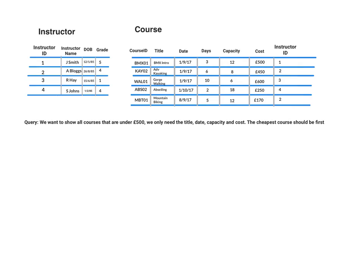We're going to look at this query: we want to find all the courses that are under £500. We only need the title, the date, the capacity, and the cost, and the cheapest course should be first. So the first part is to work out the fields we want — title, date, capacity, and cost.